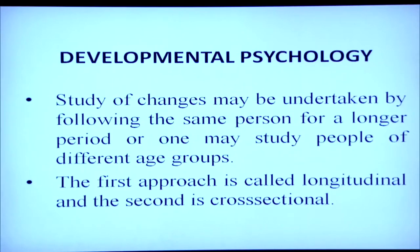The study of changes may be undertaken by following the same person for a longer period, or one may study people of different age groups. In order to understand developmental processes, we can take one child from age 3, for example, and analyze the developmental changes in that person over 10 or 15 years. Alternatively, we can study people of different age groups. The first approach is called longitudinal and the second is called cross-sectional.